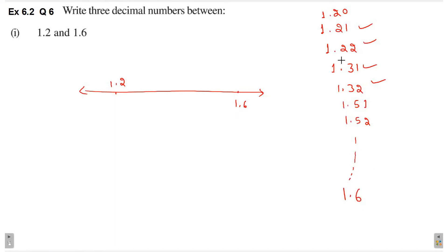So all these numbers before that are smaller than 1.6. In this way, this question does not have one specific answer. In this question, you can write any 3 numbers which lie between 1.2 and 1.6.